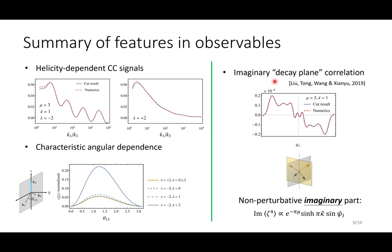For the four-point correlation function of curvature tri-spectrum, there is an interesting imaginary part corresponding to the decay plane correlation in, for example, particle colliders. Namely, the tri-spectrum would grow a non-perturbative imaginary part, which is proportional to e to the minus pi mu times an odd function of the dihedral angle spanned by the two pairs of momenta.